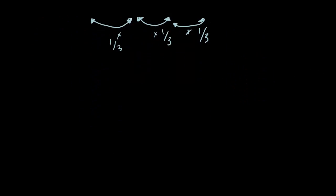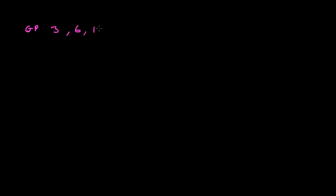Moving on, we need to know how to derive the common ratio — it's fairly simple. Consider the geometric progression 3, 6, 12, 24, and 48. If I wanted to find R, all you have to do is divide consecutive terms, just as in arithmetic progressions you subtracted T2 minus T1. In geometric progressions, you divide: R equals T2 over T1, which is 6 over 3.